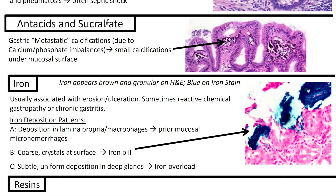Next up we've got antacids and sucralfate. This leads to gastric metastatic calcifications due to calcium and phosphate imbalances. You can see small calcifications under the mucosal surface, just like you would see calcifications anywhere — in a breast biopsy or elsewhere throughout the body. It appears as purple material that the processor has a hard time getting all the way through.